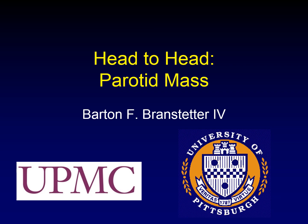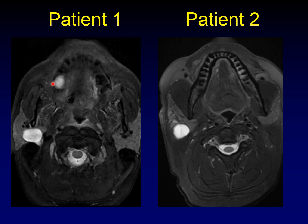In the head-to-head videos, there are two different patients with two different diseases that look a lot alike radiologically. You have to see if you can make the diagnoses on the two patients. Both of these patients have a bright T2 ovoid mass within the parotid gland. These look very much alike on these T2-weighted sequences, but even here you can start to see some differentiating features that might help you make a specific diagnosis.